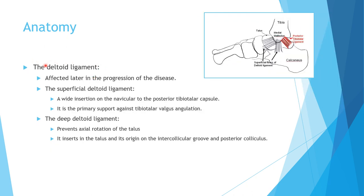The deltoid ligament is also an important anatomic structure. However, it is not affected early in the disease — it is affected later, only in stage four. The posterior tibial tendon and spring ligament are affected early. The superficial deltoid ligament has a wide insertion and is the main protection against valgus position of the talus. The deep deltoid ligament inserts posteriorly into the talus and acts mainly against rotation. So to summarize: the posterior tibial tendon and spring ligament are affected early; the deltoid ligament is affected late.